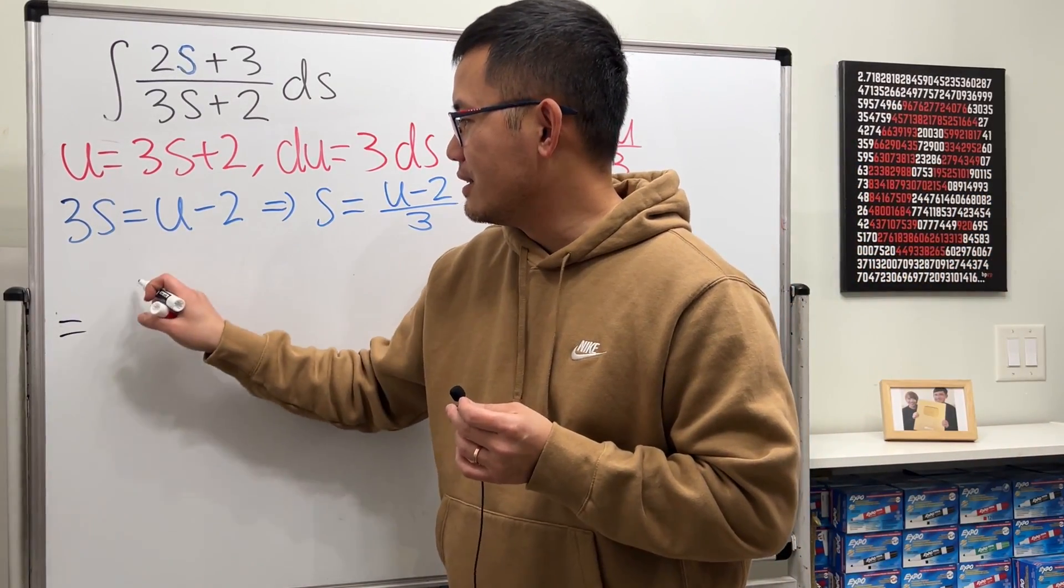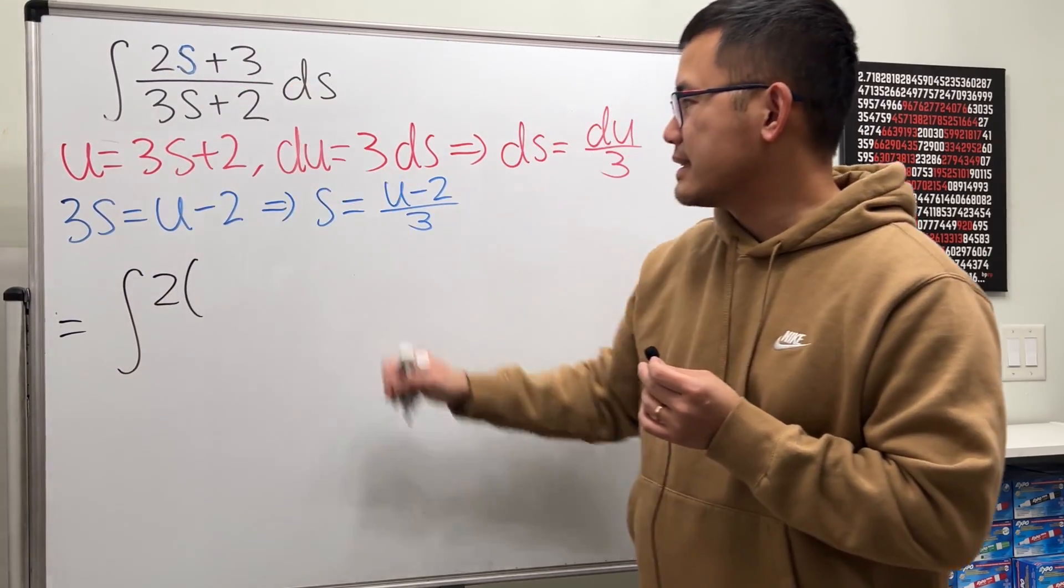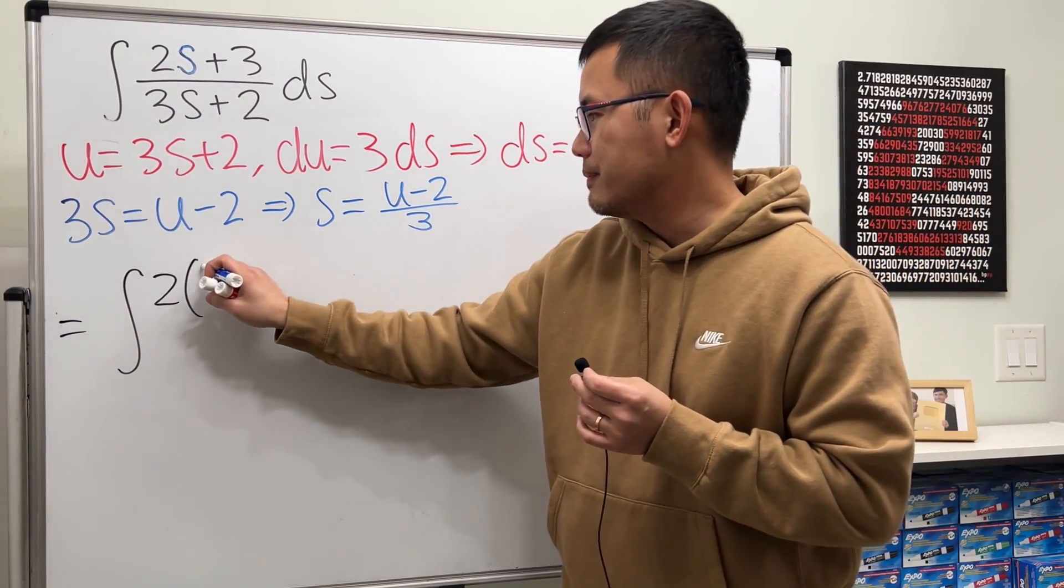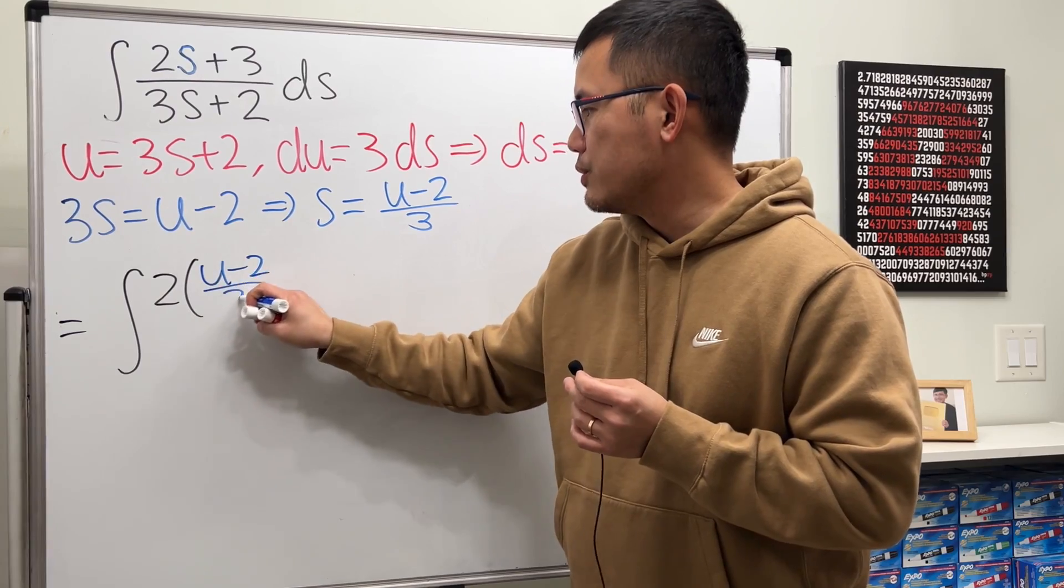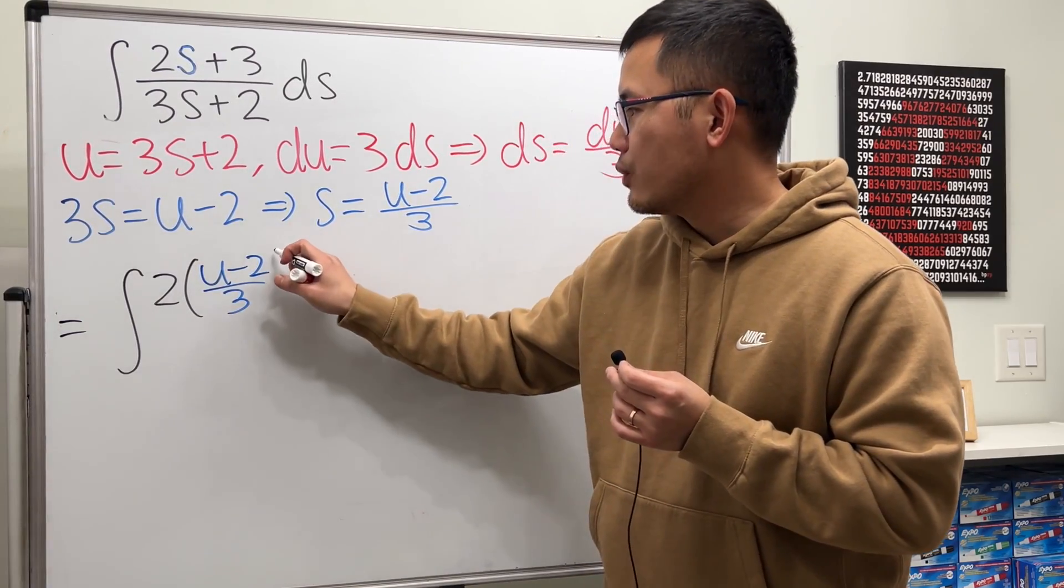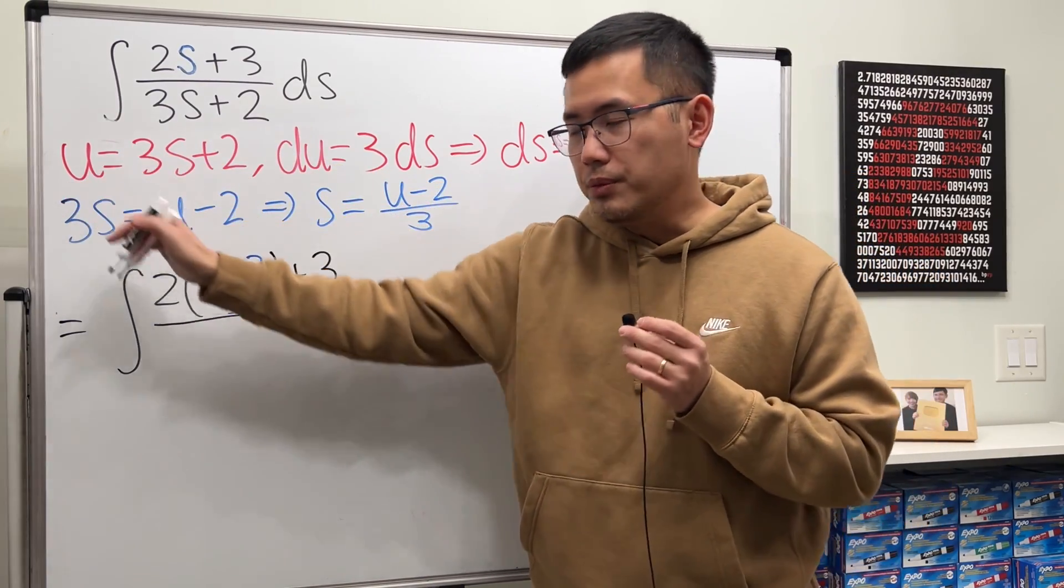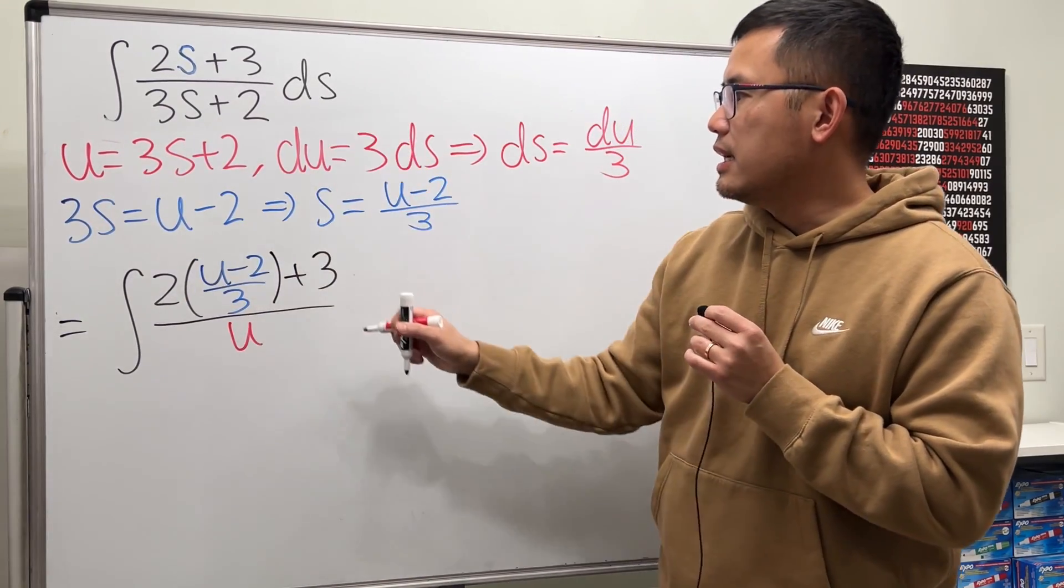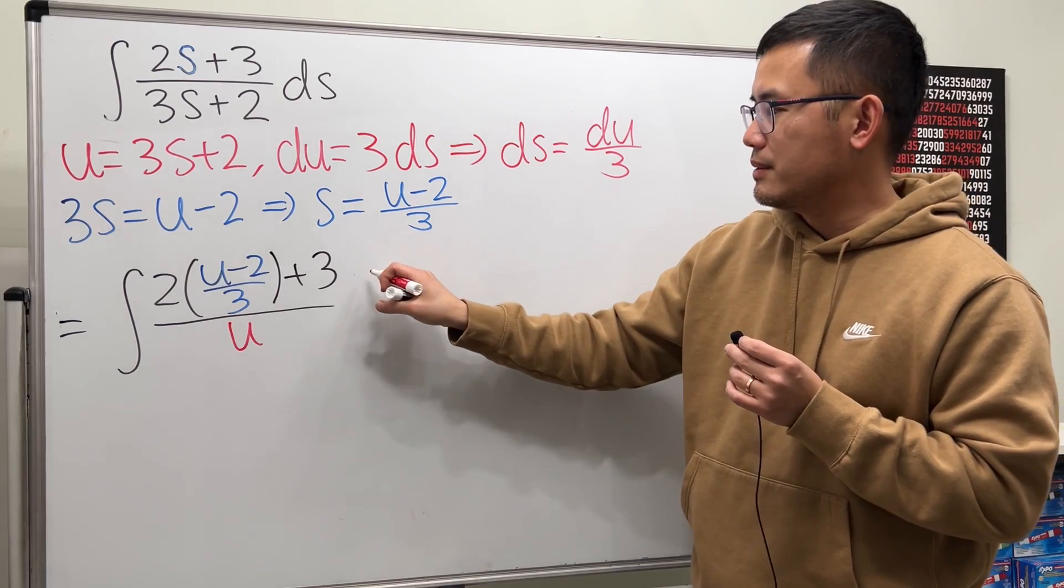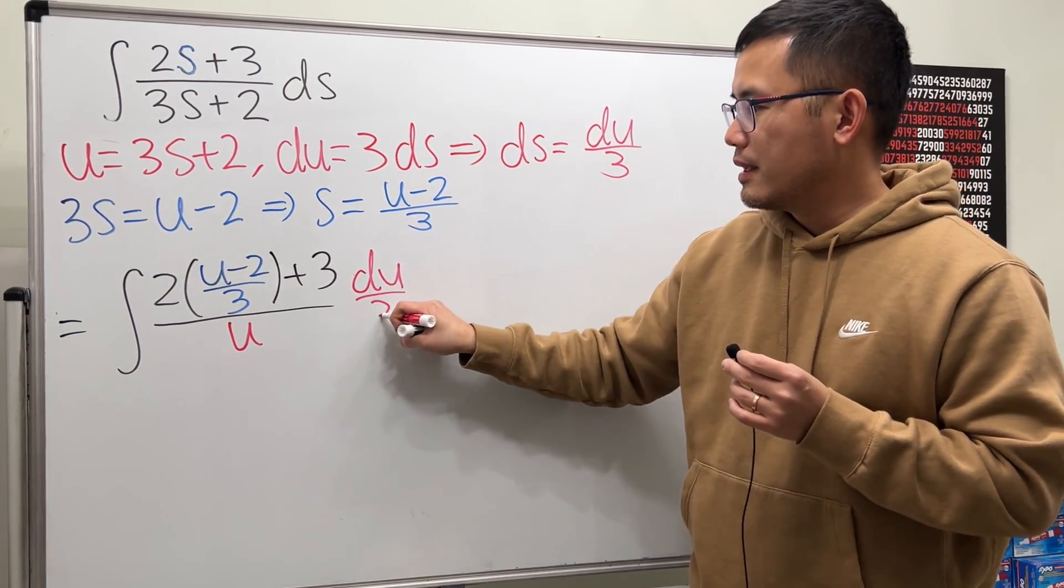Here we have the integral. 2 is 2. And the s is the u minus 2 over 3. And then after that, we have plus 3 over the denominator, which is the u. And then the ds is du over 3.